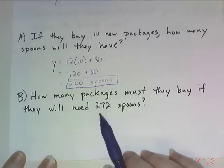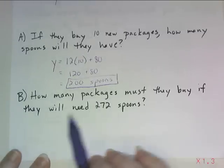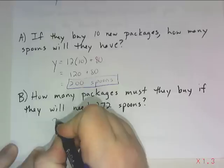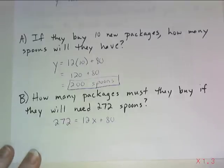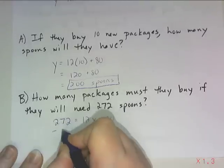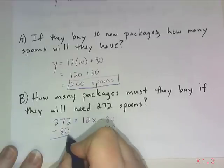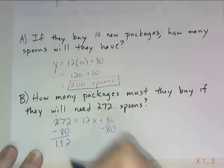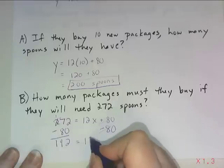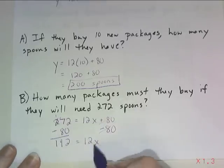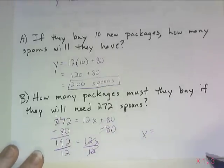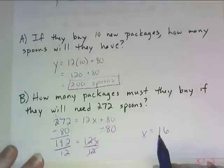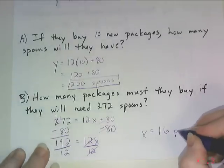How many packages must they buy if they're going to need 272 spoons? We want the total to be 272, so our y value is 272. Now we solve for x. I subtract 80 from both sides and get 192 equals 12x. Then I divide both sides by 12 and find that x equals 16. What does that 16 represent? It's not 16 spoons — it's 16 packages of spoons.